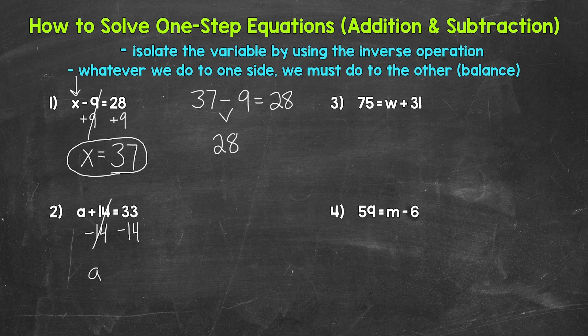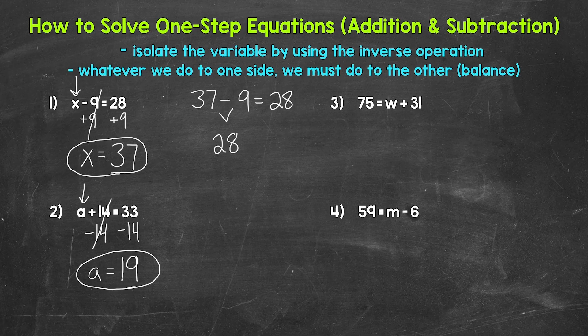A, our variable, is now isolated. So A equals, and then on the right side of the equation, 33 minus 14 gives us 19. So A equals 19 — and that's our solution. Let's check it by plugging 19 in for A and see if that works. So 19 plus 14 equals 33. 19 plus 14 is 33, so we are correct. A equals 19.